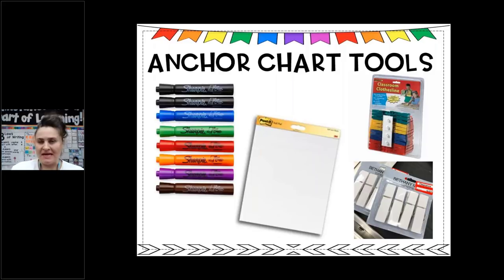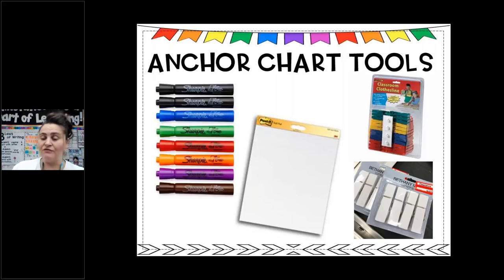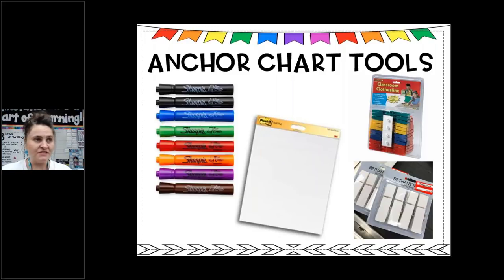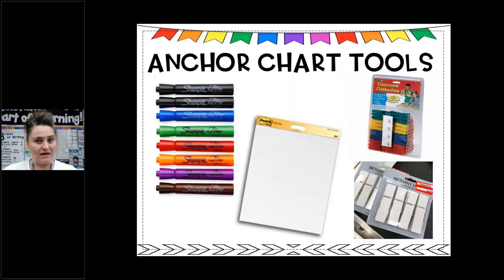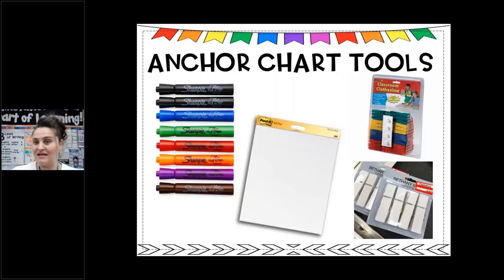I had some people donate recycled paper once and it just tore so easily, so I really try to stick to the Post-it brand. Another thing I recommend — if you can — is a classroom clothesline. I got one on Amazon that comes with 250 feet of clothesline rope and clothespins. I have it strung in my classroom and that's how I hang a lot of my anchor charts, utilizing space I wouldn't normally use.